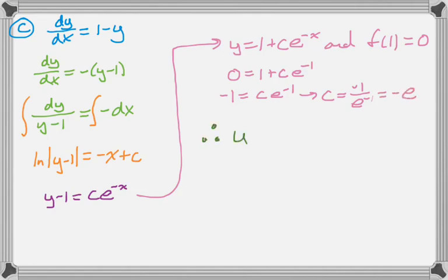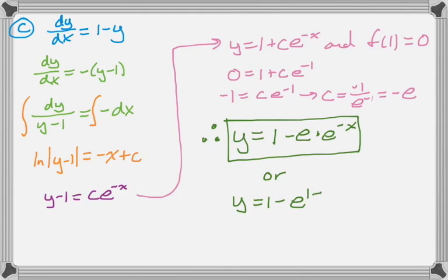Now I'm ready to write my particular solution. I could write this as 1, and then literally just replace c with negative e. So minus e times e to the negative x. Or if you're a little happier with it, you can clean up that exponent to get this. That's the entire problem. I hope this was helpful. Good luck.